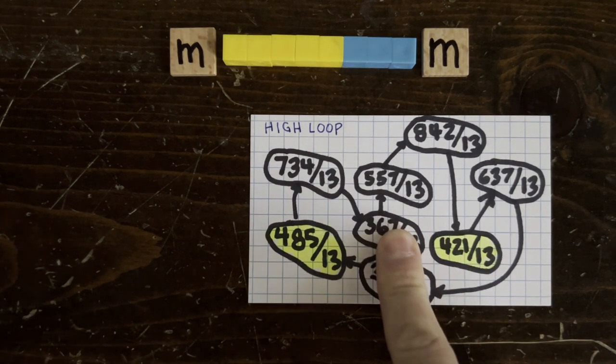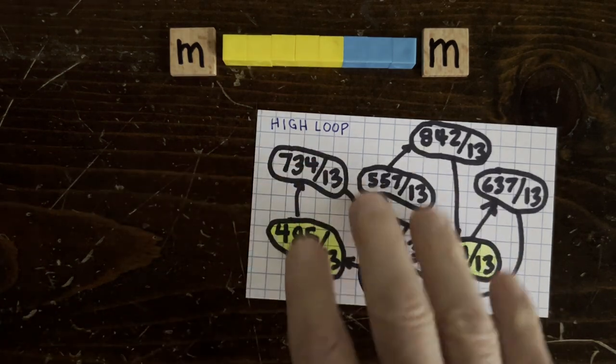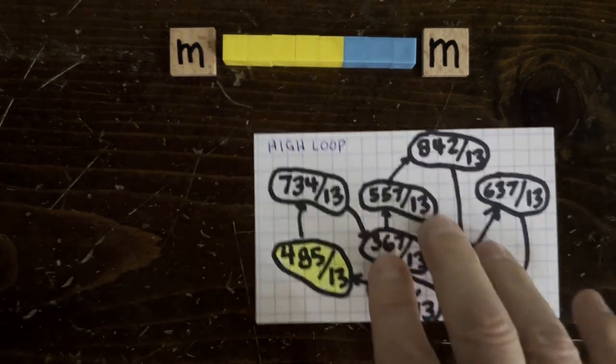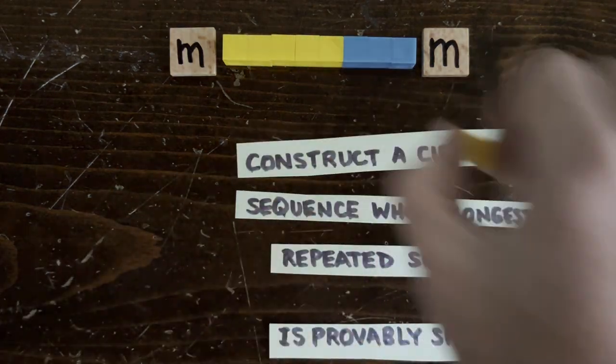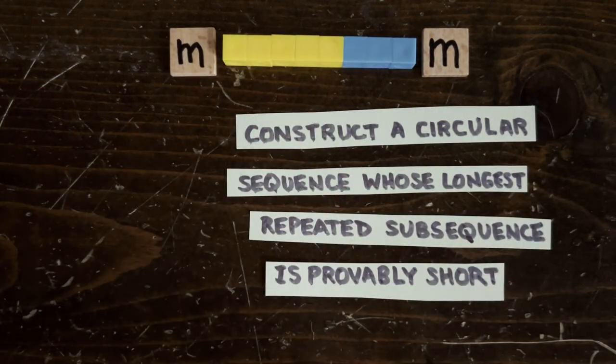Okay, but this is a random sequence, so it's hard to prove anything about a random sequence. So how about can we construct a circular sequence that's guaranteed to be the worst case for our method, one whose longest repeated substring is provably short?